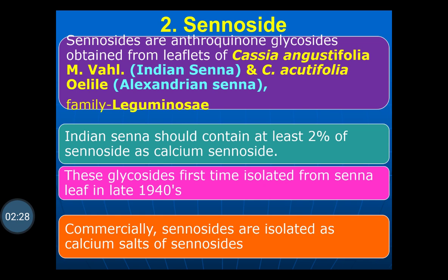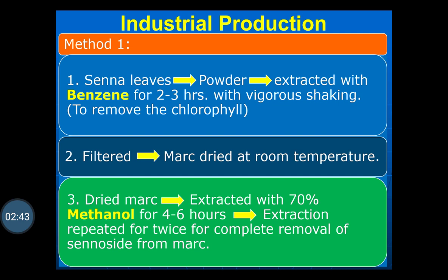Commercially, sennosides are isolated as calcium salts of the sennosides. During the isolation of the sennoside, in the last steps they are converted into calcium salts and called as calcium sennosides. For the industrial production of sennosides, the first method begins with Senna leaves being taken and coarsely powdered.